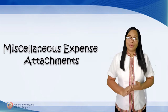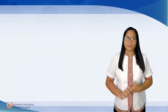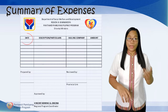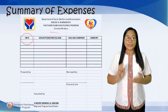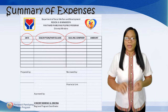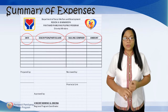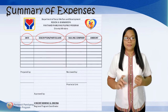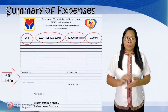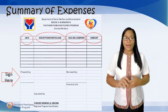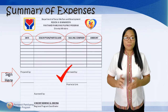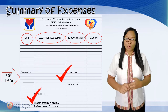Next, Miscellaneous Expenses Attachment — Summary of Expenses. The date, description of particulars, holding company, and the amount should be indicated in this form. It should also be signed by the person who prepared it, reviewed by the Provincial League, and approved by the Regional Program Coordinator.